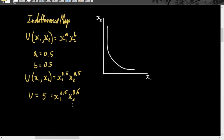We'll label this U sub 0, or U0. And so when u is equal to U0, which is equal to 5, the utility level is this white curve that we have over here.